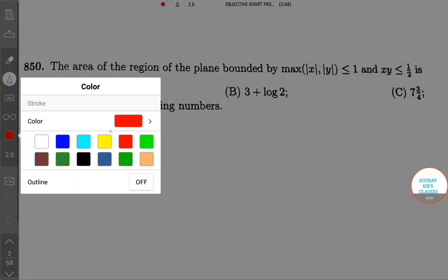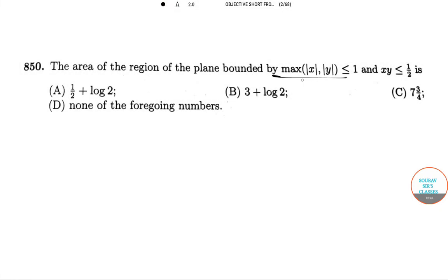they have given the maximum values over here. So we have 2 lines, now xy less than equal to half,